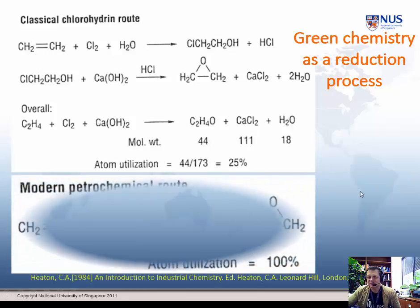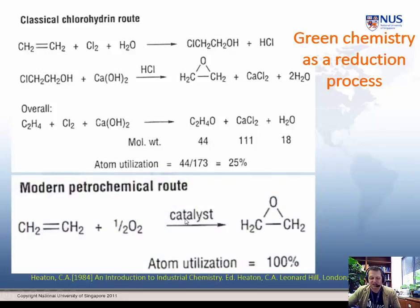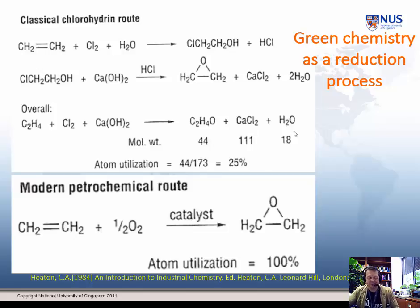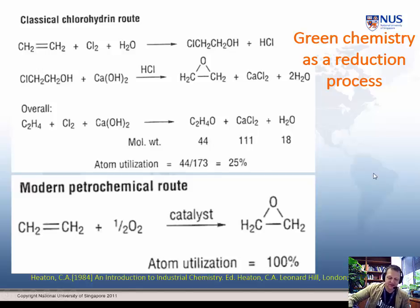Now let's put the modern route up, which uses a catalyst with oxygen. Atom utilization is 100%. This reaction runs cooler, so you're saving energy. And clearly, because you haven't got all these waste products, not only are you making a saving in terms of the environment, you're also saving money. So all of these lead to safer chemistry, more economic chemistry, and greater intensity - the action is concentrated in one step.